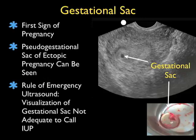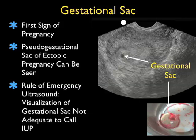The first finding that occurs during an intrauterine pregnancy is a gestational sac — a small round hypoechoic circle in relation to the rest of the uterus. Unfortunately, a gestational sac alone is not diagnostic of an intrauterine pregnancy, as a pseudo-gestational sac of ectopic pregnancy can be seen from hormonal stimulation. So the general rule of emergency ultrasound is that visualization of a gestational sac alone is not adequate to call an intrauterine pregnancy.